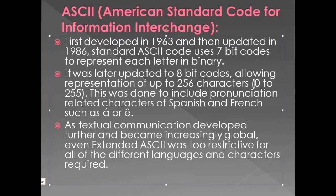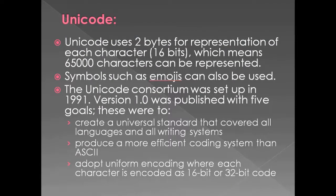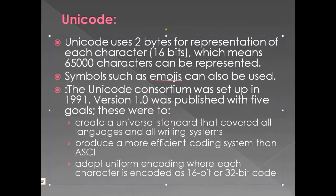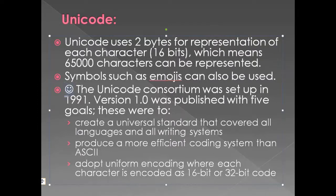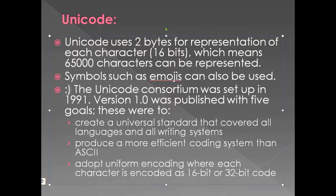In ASCII you could only write English. If you needed to write Sanskrit, Arabic, Urdu, Japanese, or Chinese, another character set was needed. That character set is known as Unicode. The benefit of Unicode is that it uses two bytes, or 16 bits, for the representation of each character, which means up to 65,000 characters can be represented. Symbols such as emojis or smileys can also be used — if you type a colon and parenthesis and it turns into a smiley, your computer is using Unicode.